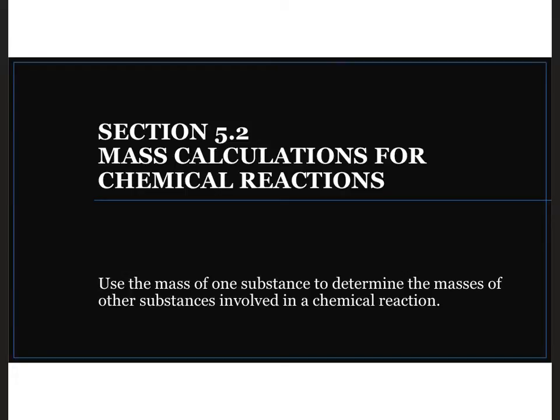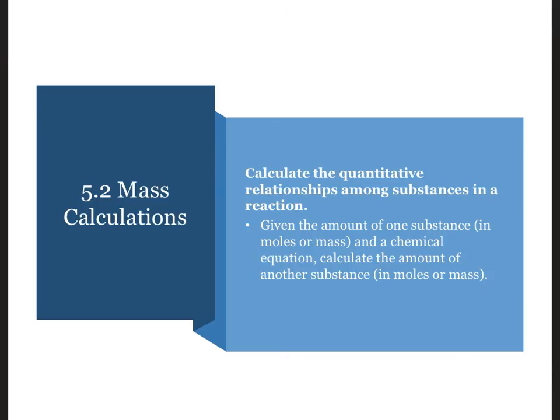This short section adds another dimension to the calculations we saw in section 5.1 using mole-to-mole ratios by asking us to convert to and from masses. This means we'll be able to use moles or mass of one substance to calculate the moles or mass of another substance using the balanced chemical equation. Let's begin.